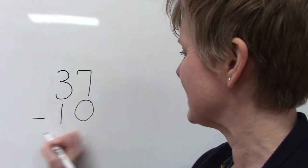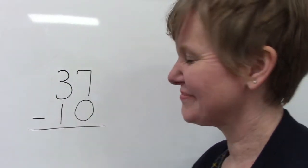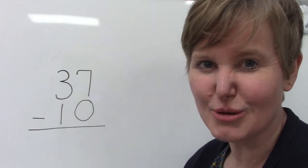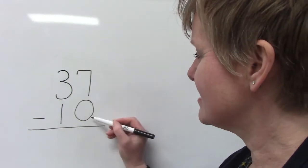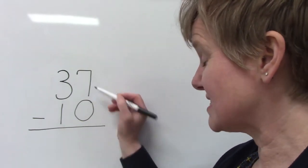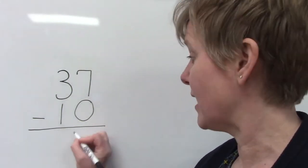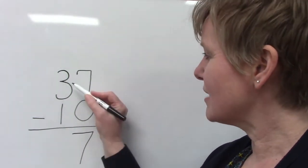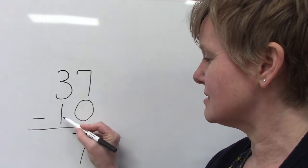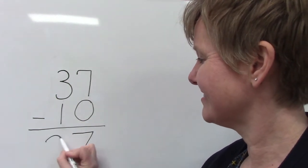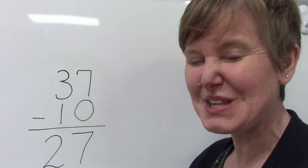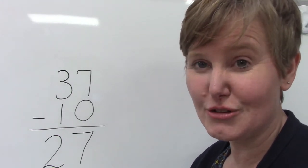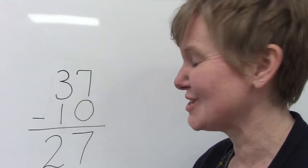37 take away 10. Let's figure it out by just looking at the numbers in the ones place. 7 take away 0 — if we have 7 and we don't take anything away, it's just going to be 7. If we have 3 and take away 1, it will be 2. So our answer is 27. 37 take away 10 is 27.